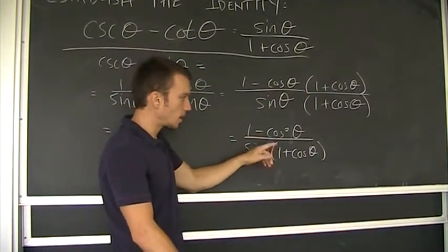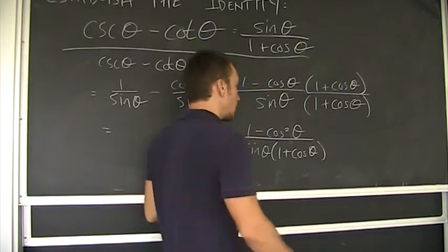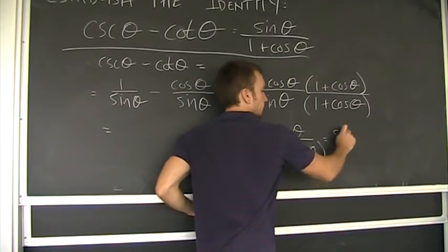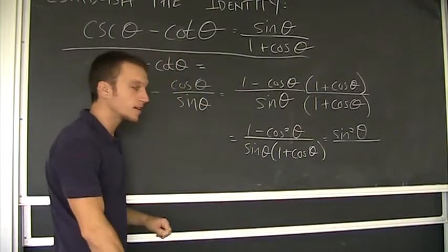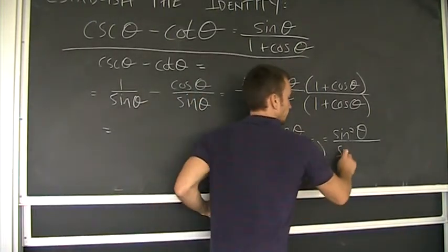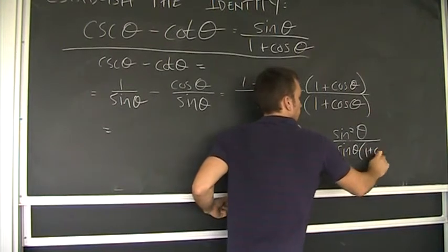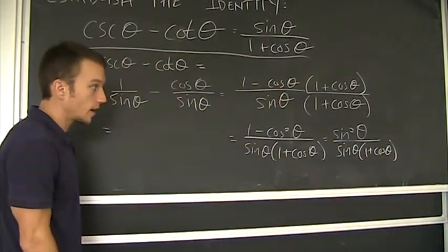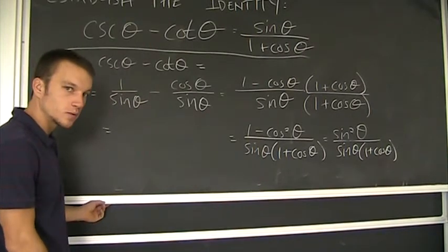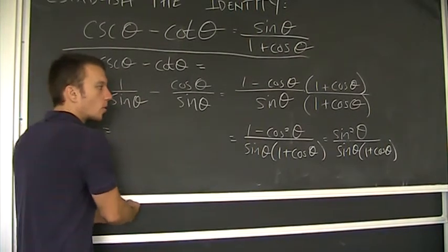And now, if I can apply one identity here, my Pythagorean identity. One minus cosine squared theta is sine squared theta down here. I've got sine squared theta over sine theta times one plus cosine theta. Let me start a new board.